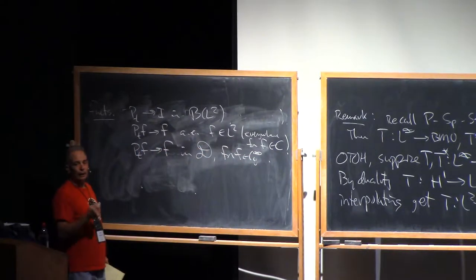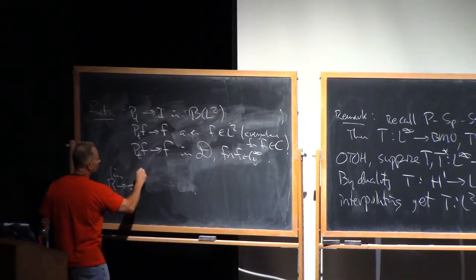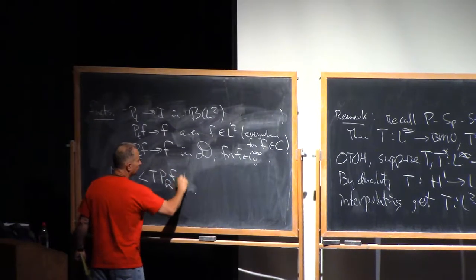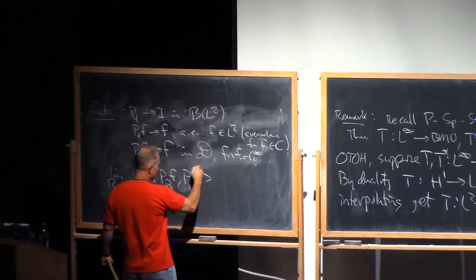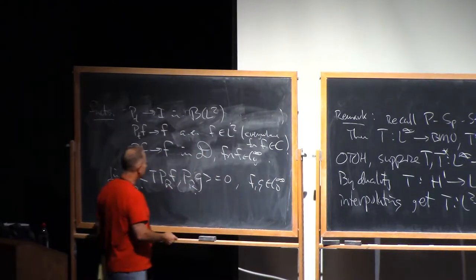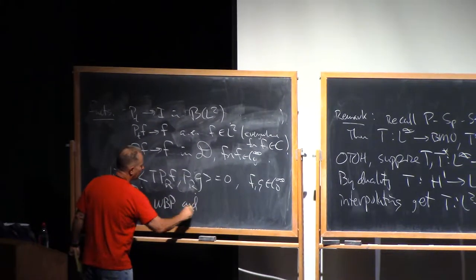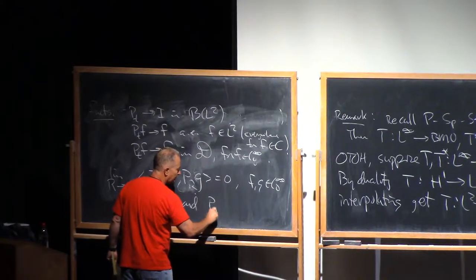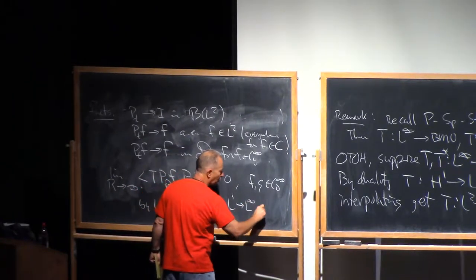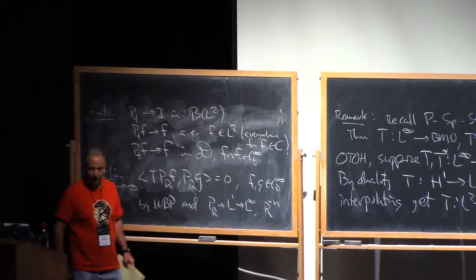But also, that PT of F converges to F in D prime for F in C zero infinity. That's routine to check. And one more thing, which is that the limit as R goes to infinity of the inner product T of PR of F, PR of G, I should say, is zero for F and G in C zero infinity. And this is a consequence of the weak-bounded property.